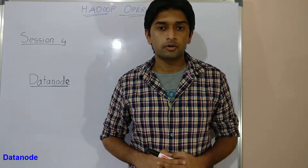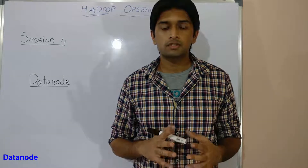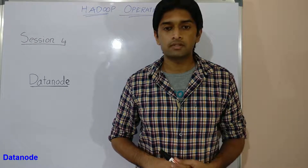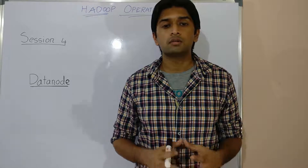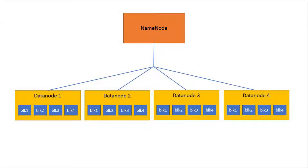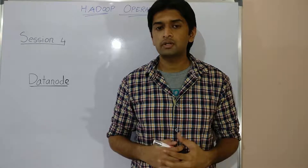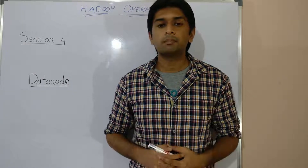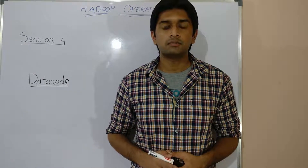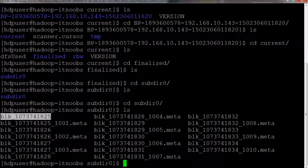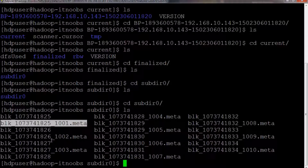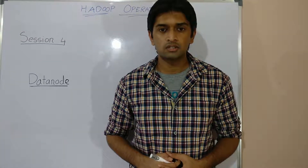The data node is the component of HDFS responsible for storing HDFS data blocks. On any production cluster, there will be a large number of data nodes running on separate servers. As we saw in the previous session, each replica of an HDFS block is represented by two files on the local file system: the first file contains the data itself, and the second records the block metadata, including the checksum and generation stamp.